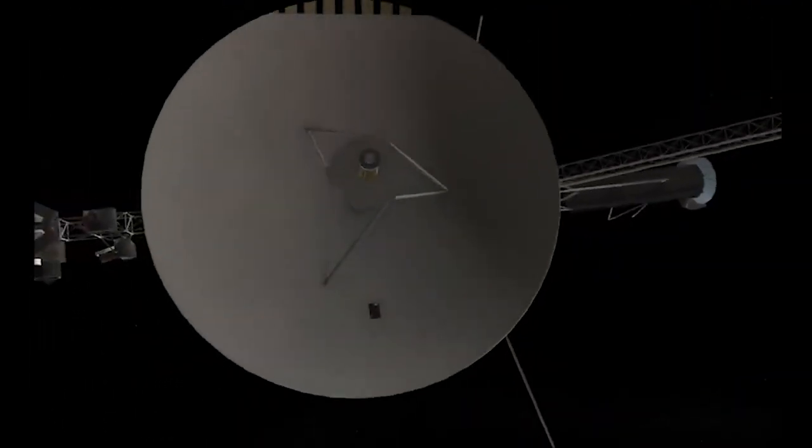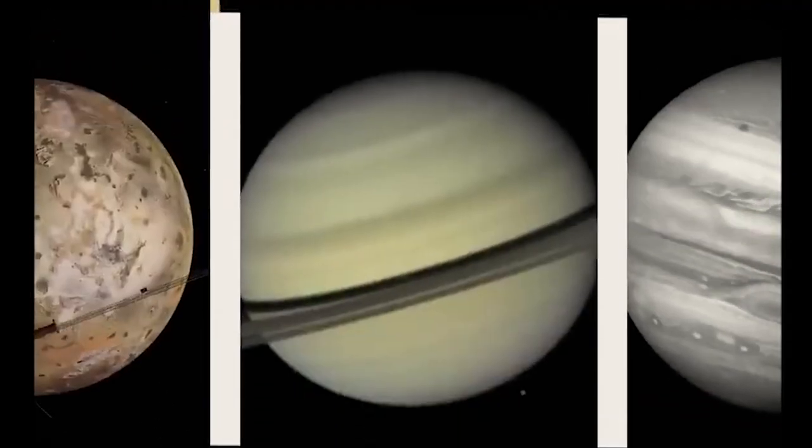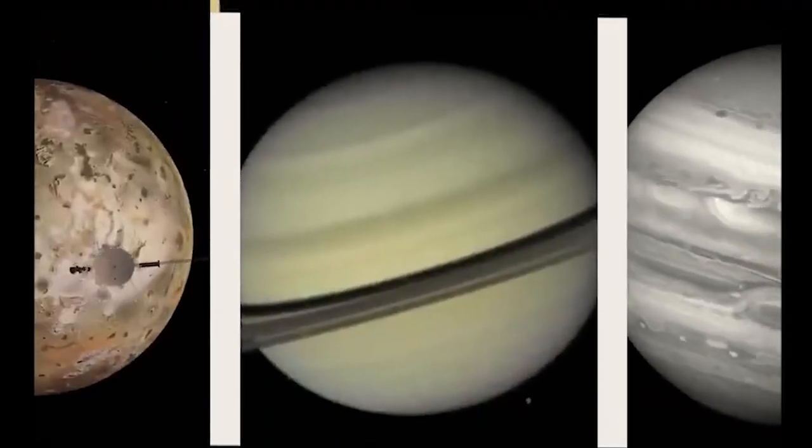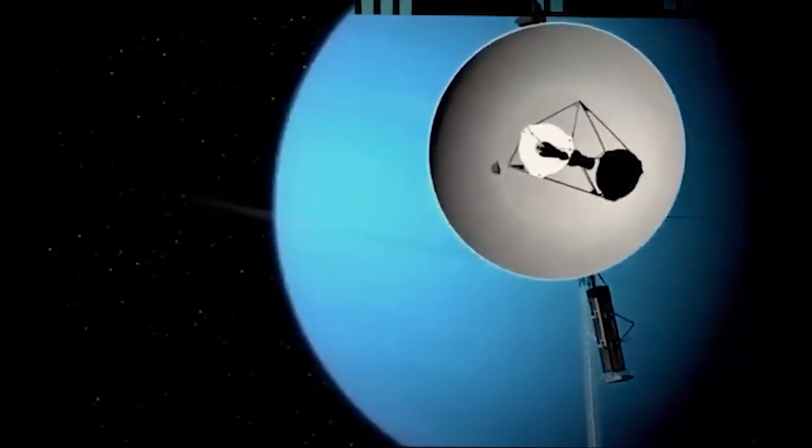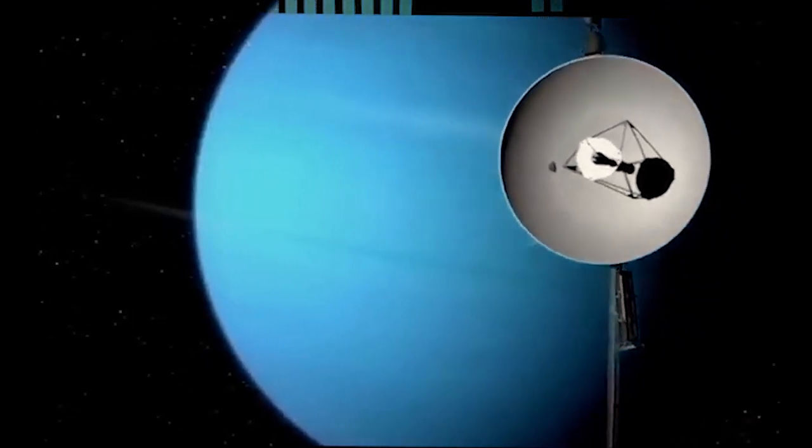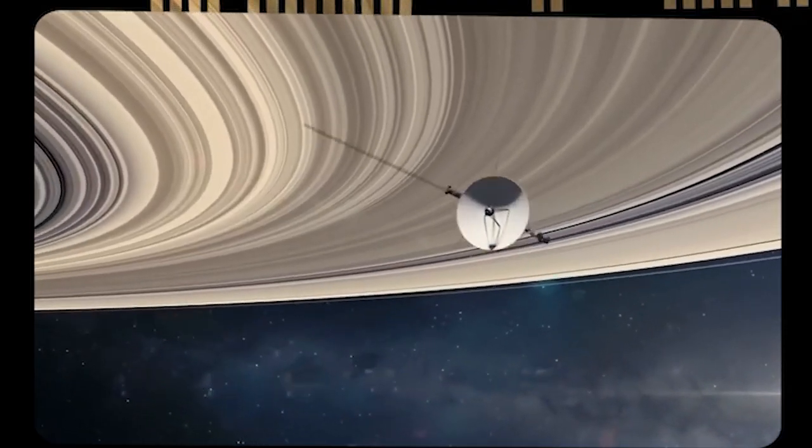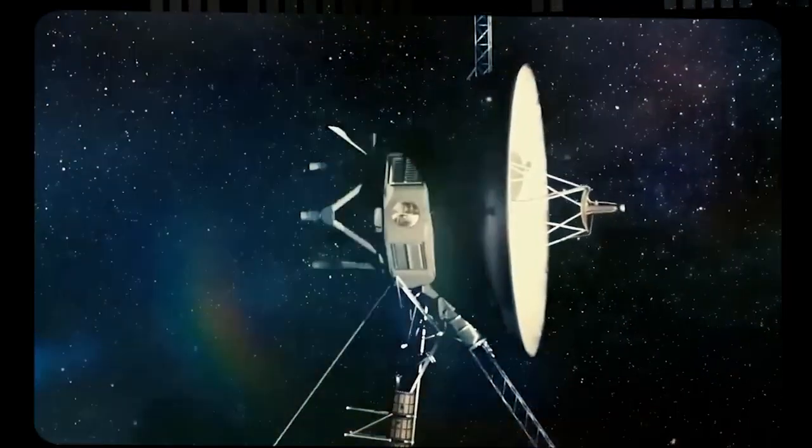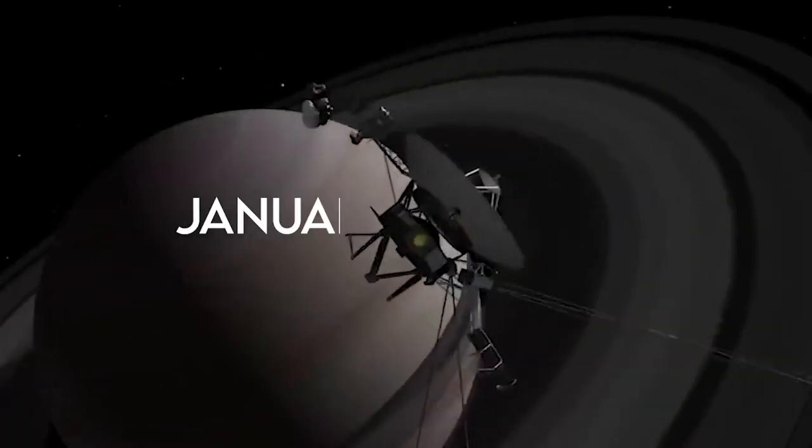When we send radio signals from Earth to Voyager 1, these signals travel at the speed of light, and it takes a whopping 17 hours for these signals to reach the spacecraft. Here's a little time travel scenario to help you understand better. If we send a signal from Earth on January 1st, 2000,